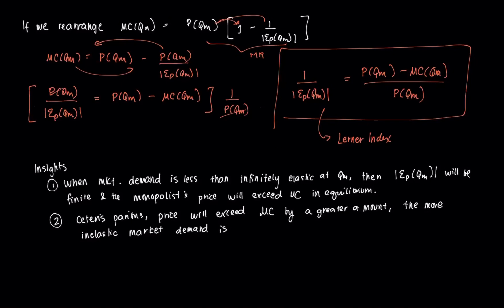But for now, we just want to emphasize a few insights. So first is that when market demand is less than infinitely elastic, a horizontal line at QM, then the elasticity of price of the monopolist will be finite. Of course it's solvable, so you can solve this expression there. And the monopolist's price will exceed marginal cost in equilibrium.